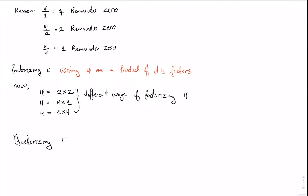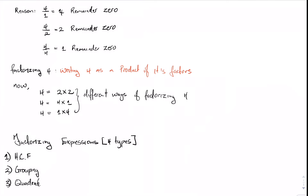When factorizing expressions, it's important to know that there are four types of factorization: number one, the HCF — also called the highest common factor; number two, grouping, which is performing the HCF twice; number three, factorizing by the method of the quadratic equation; and number four, factorizing by difference of two squares. In this video we will look at the first two, and in the subsequent video we'll look at numbers three and four.